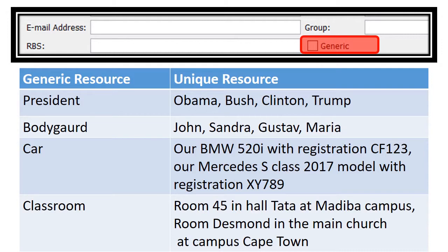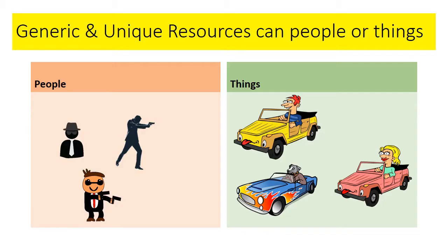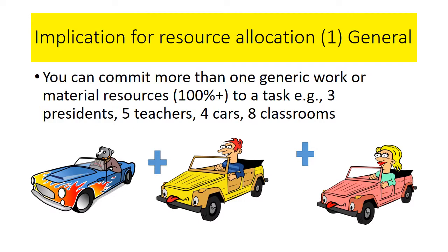So those are the types of resources you generally get. Resources are distinguished in many ways, but one way is generic versus unique. A generic resource can be people or things. The implication is that you can commit more than one generic resource to a task — three presidents, five teachers, four cars in a convoy. You input it not as one, but as 200% or 300% if you want to assign multiple generic resources.